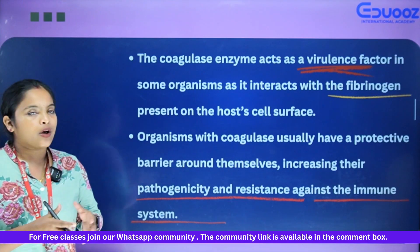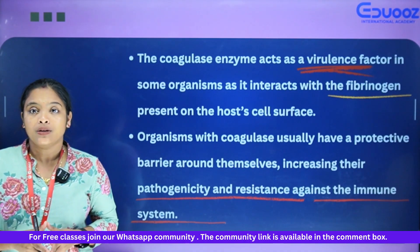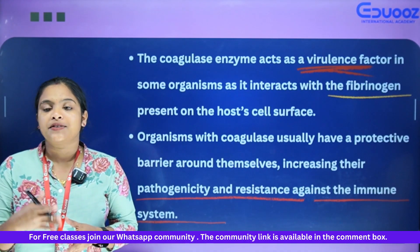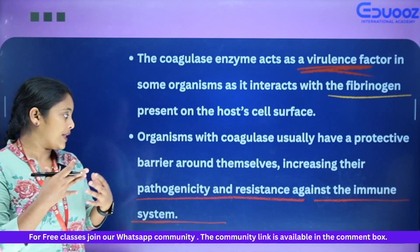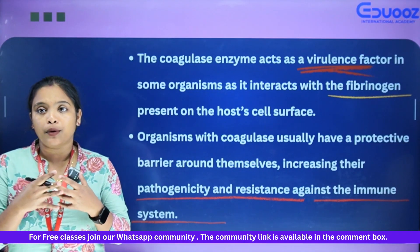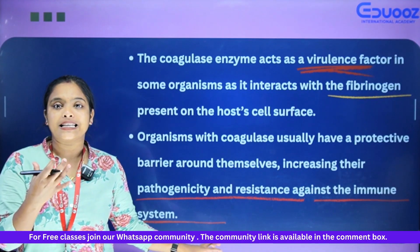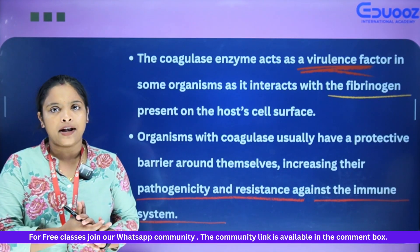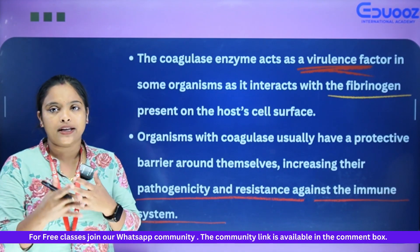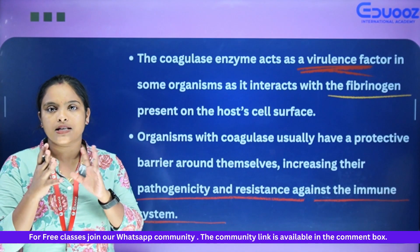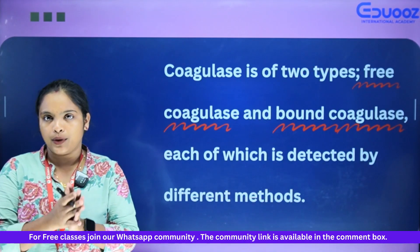Organisms with coagulase usually have a protective barrier around themselves. That is the pathogenicity, and the immune system starts to show resistance. So that is why there is an increase in pathogenicity and immune resistance.